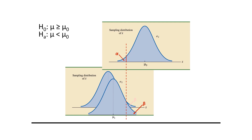That is why we say if we do not reject H0, we cannot accept H0, because we are unsure about how confident we will be doing that. We are unsure about what the value of beta is — the probability of making an error if we were to accept H0.